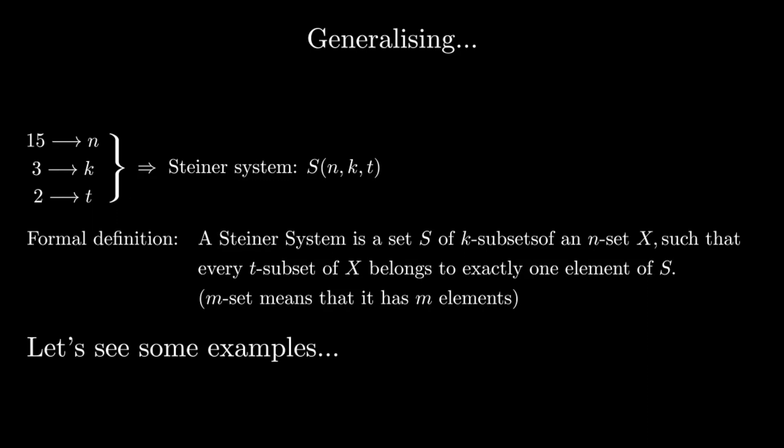You've already seen one. The solution to Kirkman's schoolgirl problem is nothing but a Steiner system with parameters 15, 3 and 2.